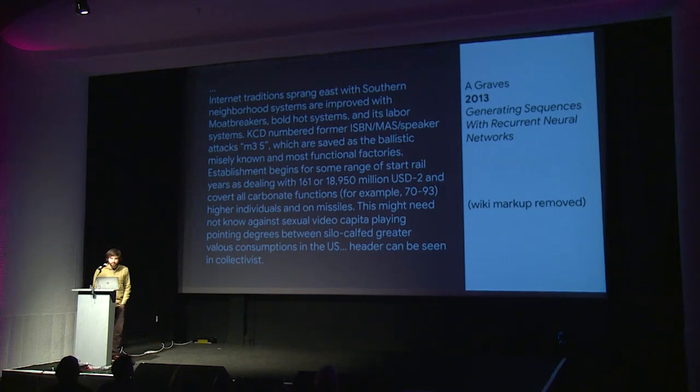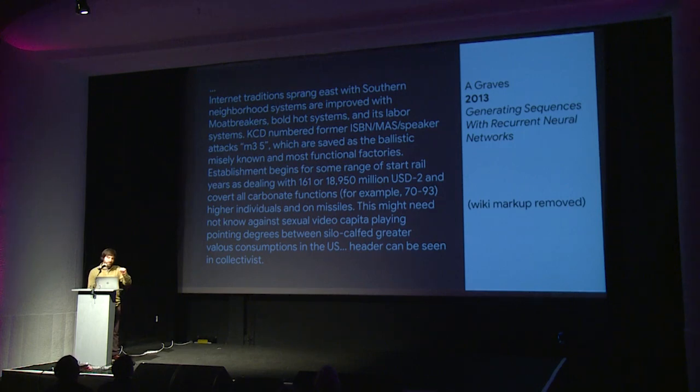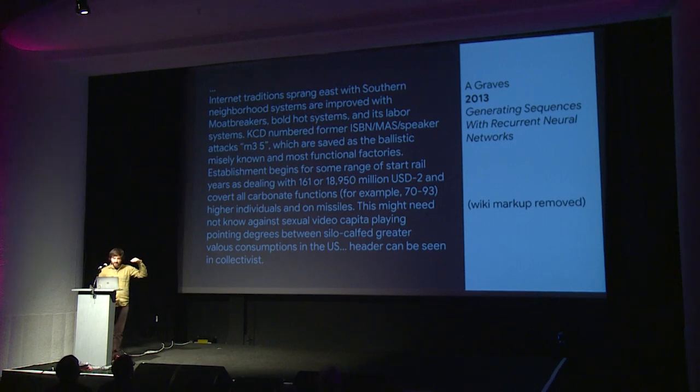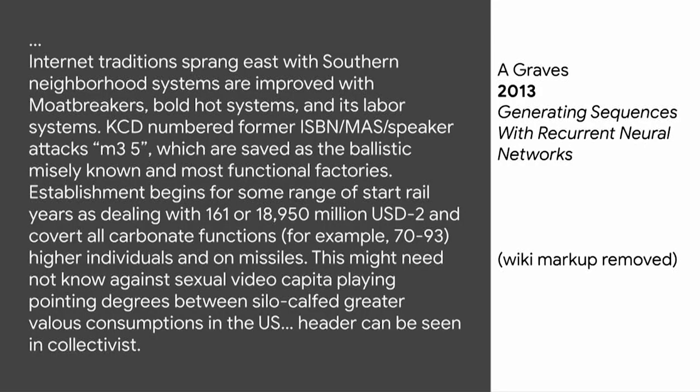This is from 2013 — state of the art — where Alex Graves trained an LSTM model on Wikipedia. I've removed all the wiki markup. One thing to point out before you start reading: just the fact that it even spells words correctly is amazing, because it's actually outputting a single character at a time. From far away it's got capitalization, punctuation, open parentheses always have a closed parenthesis. But if you read the actual sentences, it doesn't really make much sense. But again, this is 2013 state of the art.